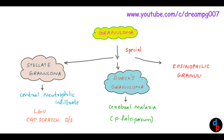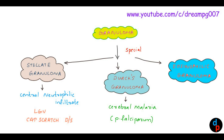Eosinophilic granuloma is a special type of granuloma which occurs due to parasitic infection. It is also seen in Churg-Strauss syndrome.